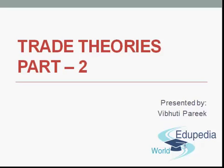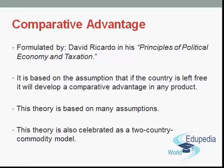What is the comparative cost advantage theory? The comparative cost advantage theory was first systematically formulated by the English economist David Ricardo in his 'Principles of Political Economy and Taxation' published in 1817. It was later refined by J.S. Mill, Marshall and others.